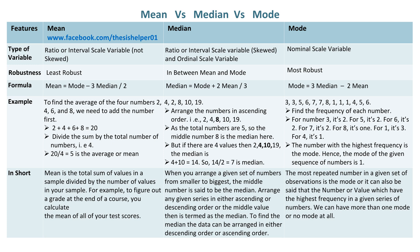The most repeated number in a given set of observations is the mode, or it can also be said that the number or value which has the highest frequency in a given series of numbers. We can have more than one mode or no mode at all.